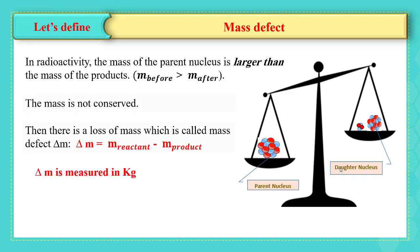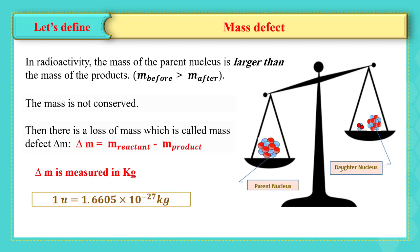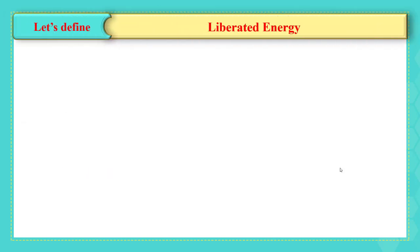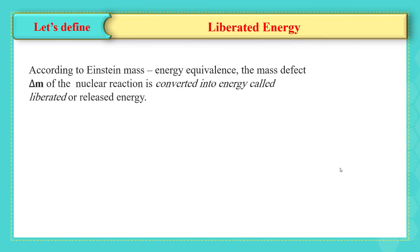The SI unit of mass is kilogram, but since the mass of the nucleus is very small, the mass of the nucleus is given in atomic mass unit u. There is a relation between u and kilogram: one u is equal to 1.66 times 10 to the power of minus 27 kilogram.